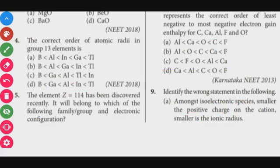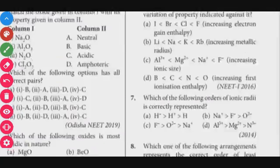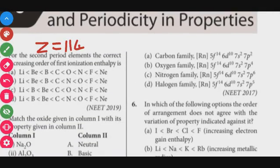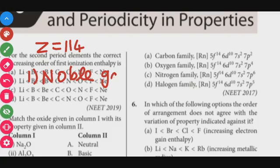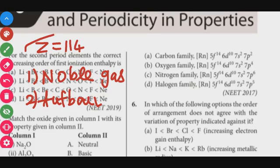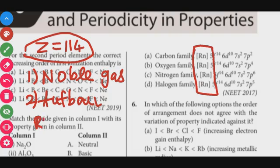Question number 5: The element with Z equal to 114 has been discovered recently. It will belong to which group or family? To find this, we use the nearest noble gas configuration. The nearest noble gas is Radon with atomic number 86.